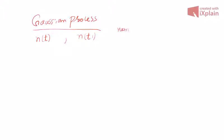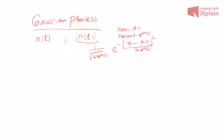This sample will have a Gaussian distribution. Gaussian distribution is characterized by two things: the mean — suppose you take mean as μ(t) — and variance — suppose σ²(t). At time t₁, its distribution will look like: 1 over √(2π σ²(t)) · e^(−(n − μ(t))² / (2σ²(t))).